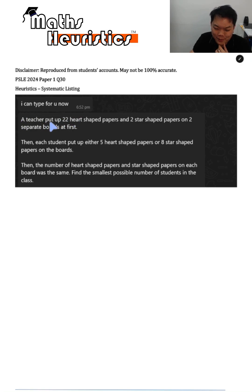This was typed out for me by my student. A teacher put up 22 heart-shaped papers and 2 star-shaped papers on 2 separate boards at first. Then each student put up either 5 heart-shaped papers or 8 star-shaped papers on the boards. Then the number of heart-shaped papers and star-shaped papers on each board was the same. Find the smallest possible number of students in the class.